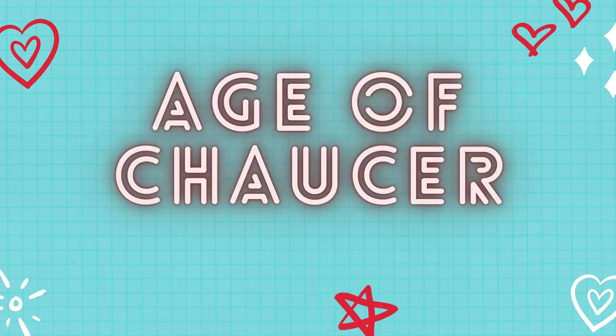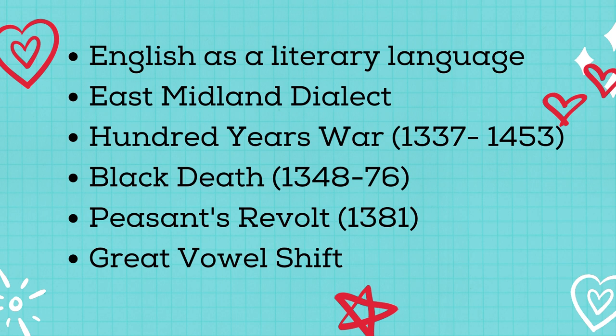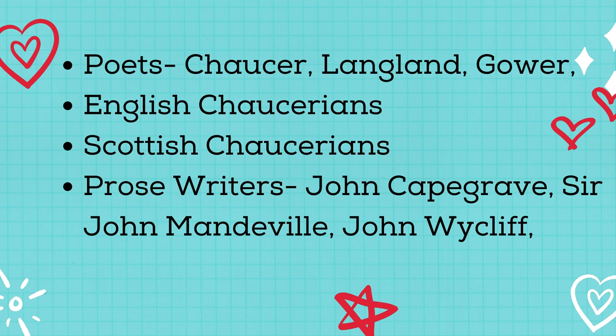Next we have the Age of Chaucer. In this age, English established itself as a literary language and the East Midland dialect gained its prominence. The important events in this age are the Hundred Years' War from 1337 to 1453, the attacks of bubonic plague from 1348 to 1376, the Peasants' Revolt in 1381, and the Great Vowel Shift. Famous writers of this age are Chaucer, Langland, Gower, and the English and Scottish Chaucerians.